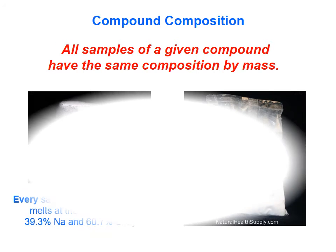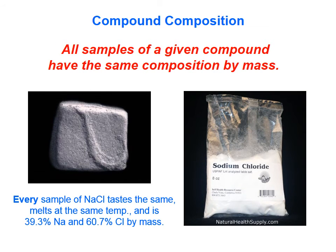All samples of a given compound have the same composition by mass. In other words, if I have a very tiny sample of sodium chloride on the left, and a larger sample of sodium chloride on the right, they have the same composition. As noted, every sample of NaCl tastes the same, melts at the same temperature, and is 39.3% sodium and 60.7% chlorine by mass.